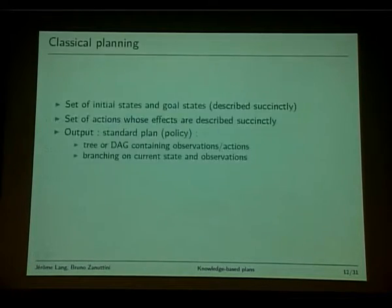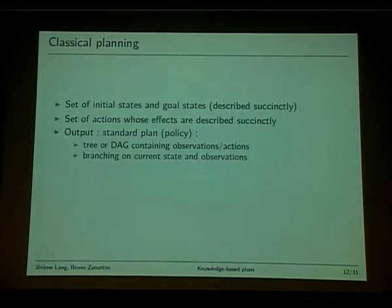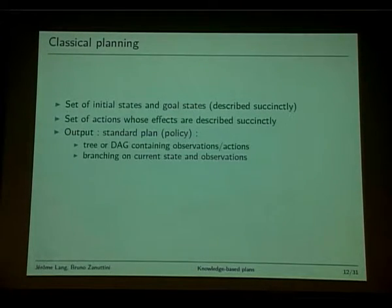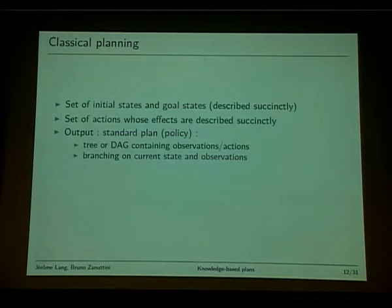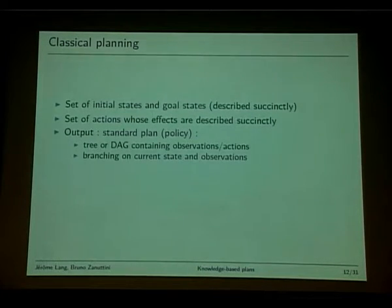Now let's formally define knowledge-based planning problems. In classical AI planning, we have a set of initial states and a set of goal states, usually described succinctly using some logical language, plus a set of actions. The output is a standard plan or policy — a tree or directed acyclic graph containing observations and actions. Importantly, in standard policies, branching conditions bear directly on observations and the current state; they do not use complex epistemic formulas.